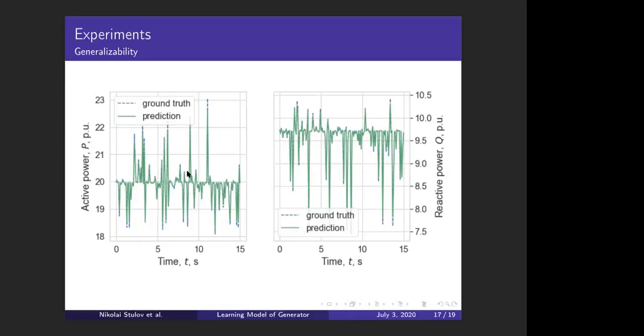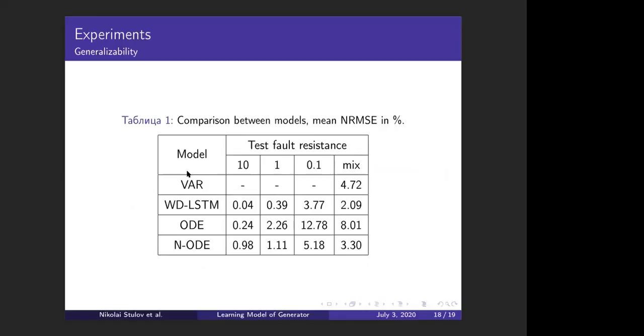In this table we have a comparison between the metric that we chose, normalized root mean squared error, and it supports my claim that neural ODE is positioned in the middle between long short-term memory and the DAE network. This is on a data set with randomized parameters.